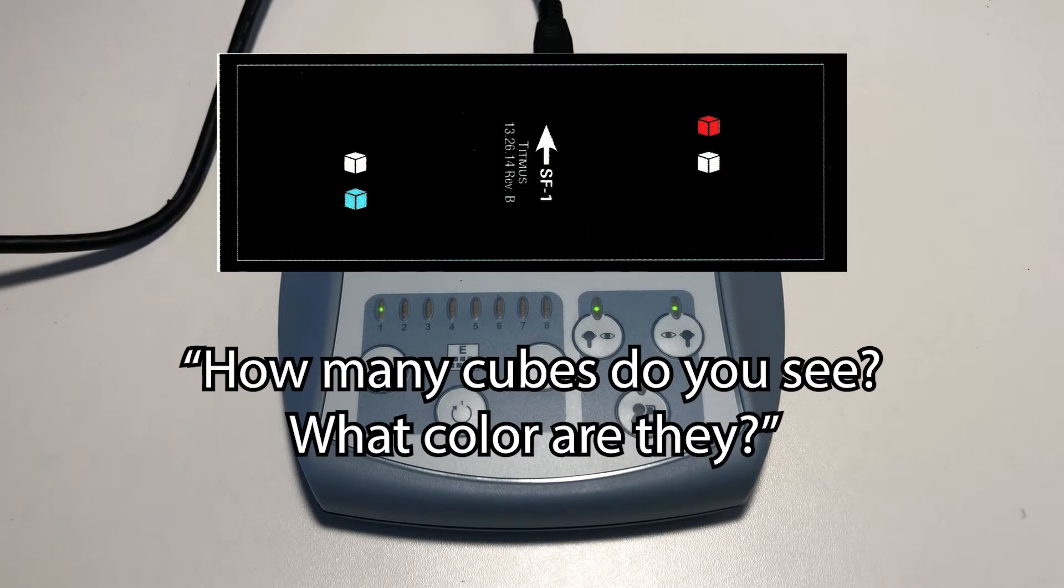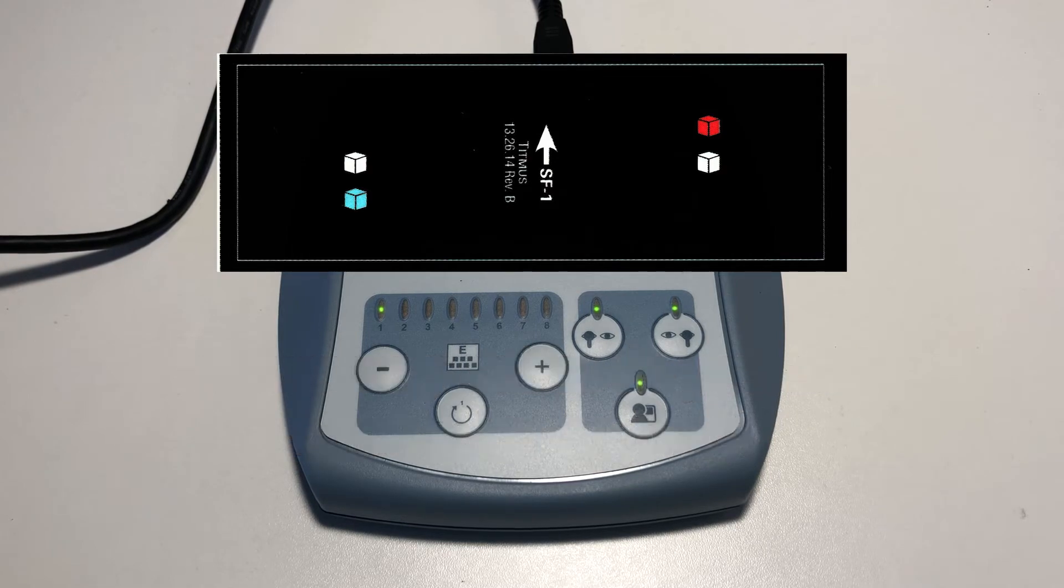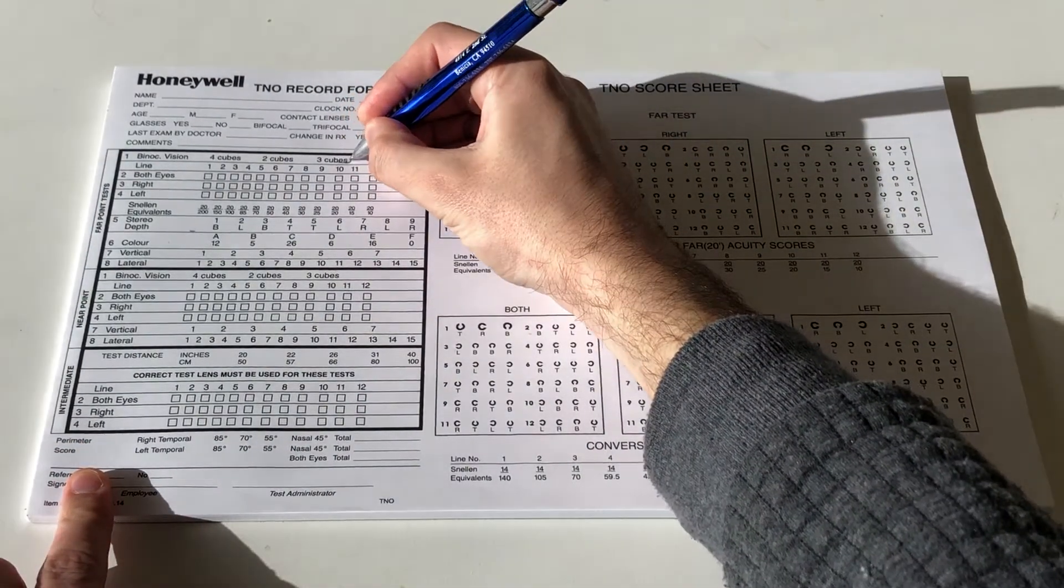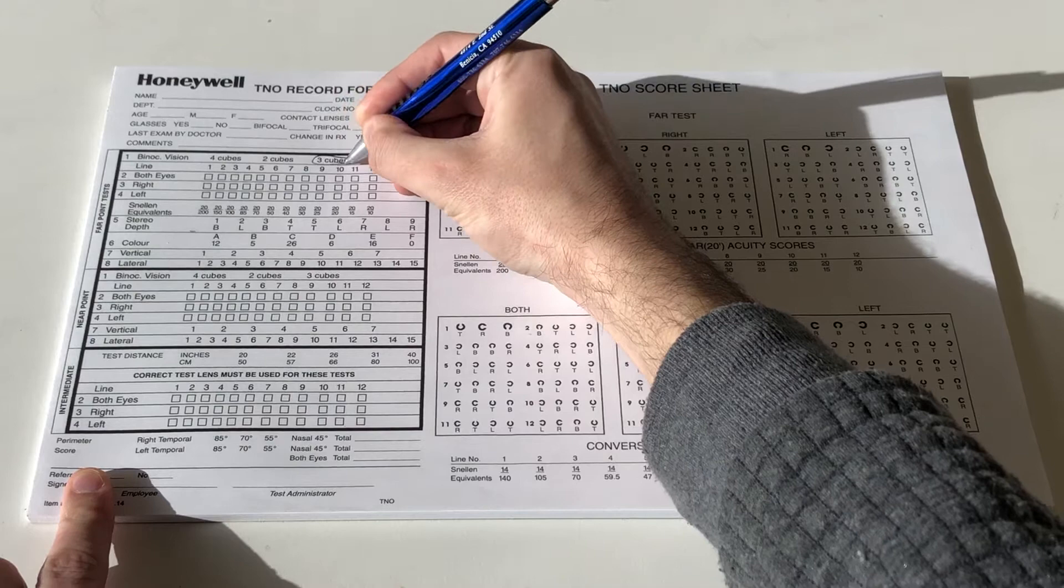Ask the patient, how many cubes do you see and what color are they? On the record form, mark the number of cubes seen by the patient in the first section of the Far Point test box.